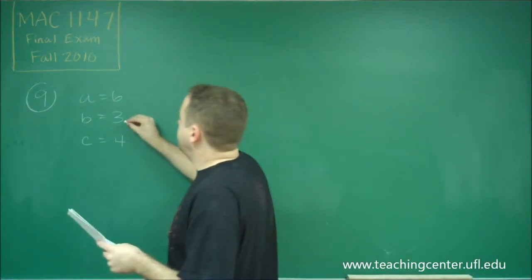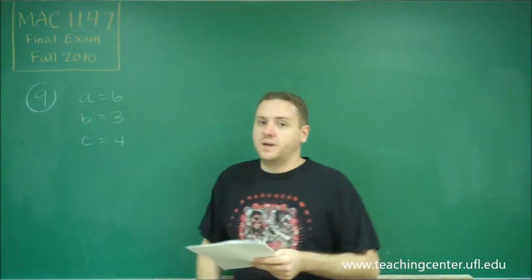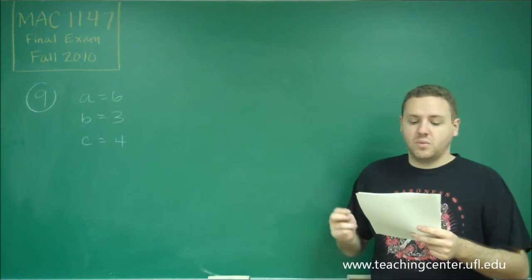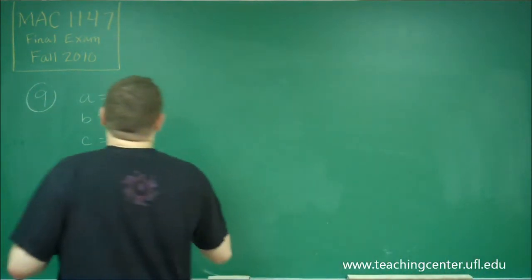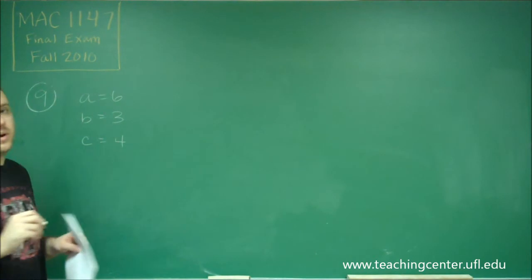You can see here if this were three, four, five, then we would have a right triangle. But we have three, four, and six, so it's going to be pretty close to a right triangle.